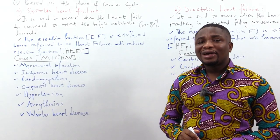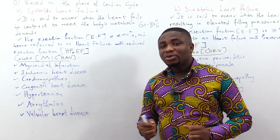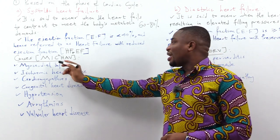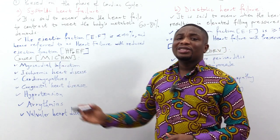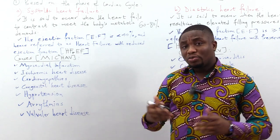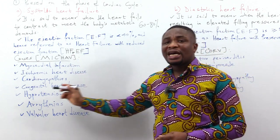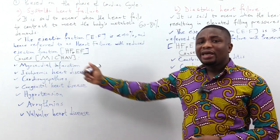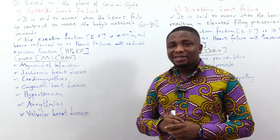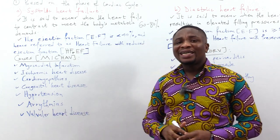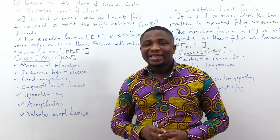Let's look at the causes of systolic heart failure. We will use an easy mnemonic called 'My Square Half': myocardial infarction, ischemic heart disease, cardiomyopathies (such as peripartum cardiomyopathy as an example), hypertension, arrhythmias (ventricular tachycardia and supraventricular tachycardias), and valvular disease — which could be stenosis or regurgitation.